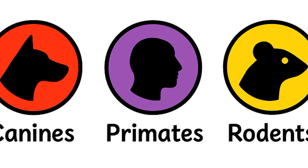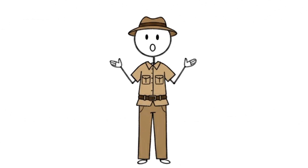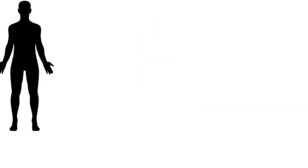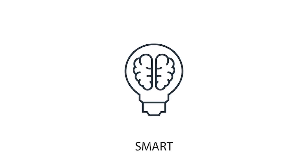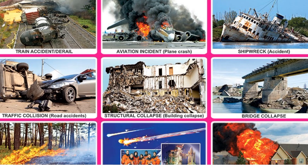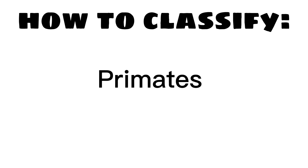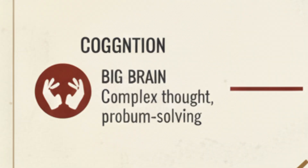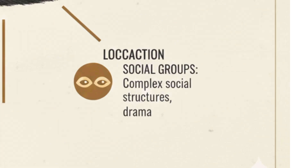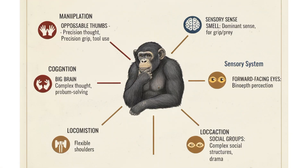Primates — the high IQ troublemakers. Primates include humans, apes, monkeys, lemurs — the smart but chaotic group. How do you classify a primate? If an animal has opposable thumbs, forward-facing eyes, a big brain, flexible shoulders, and social groups with drama — it's a primate.